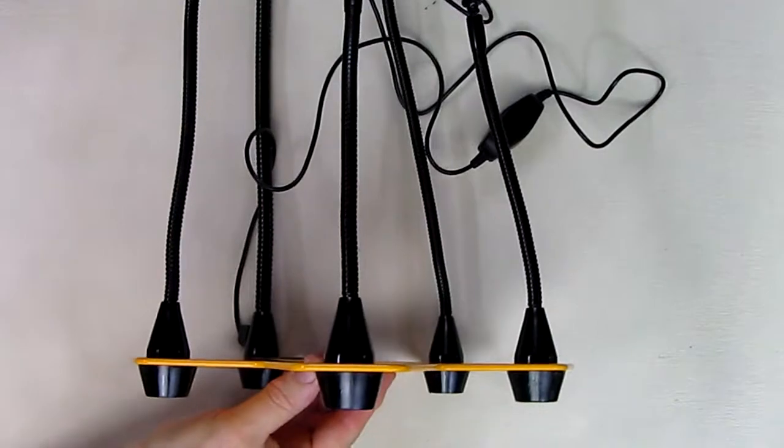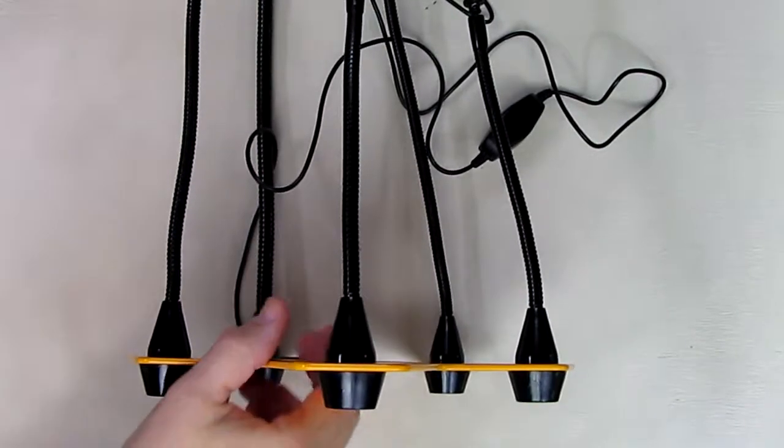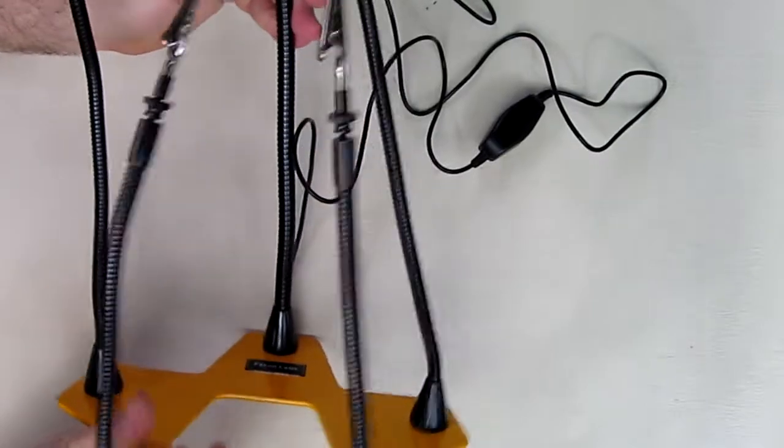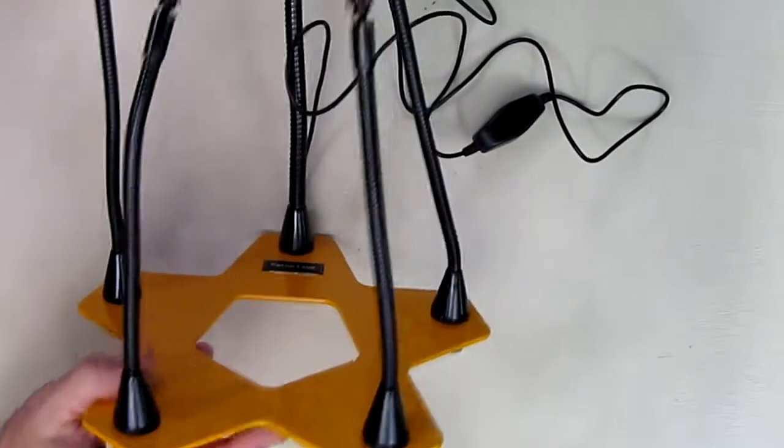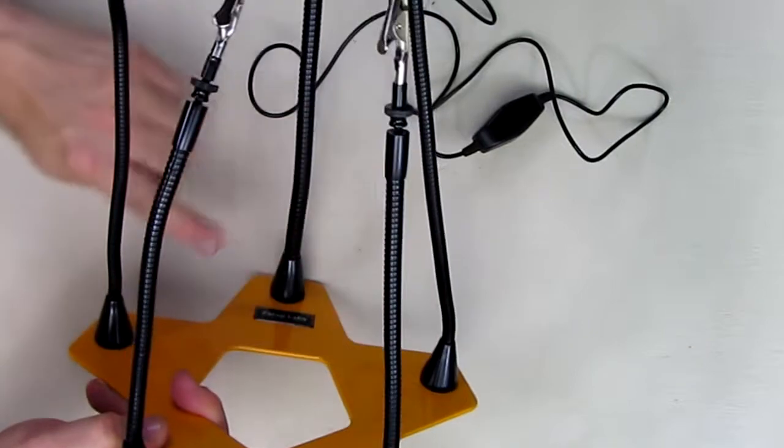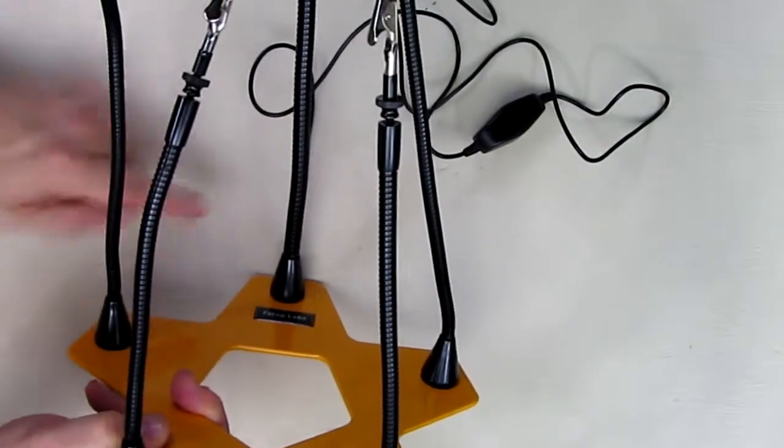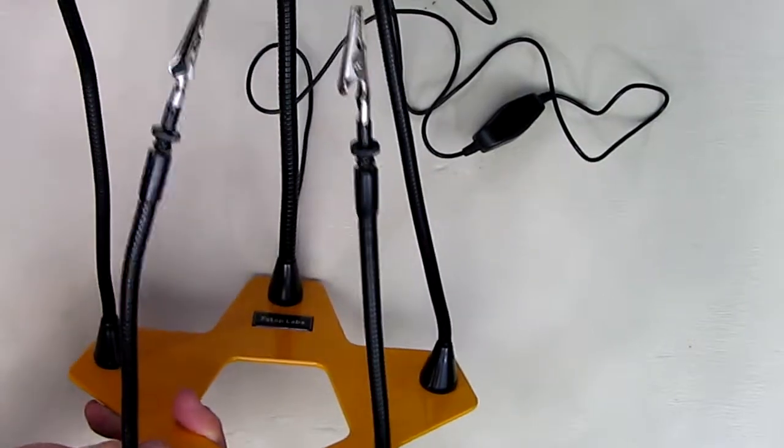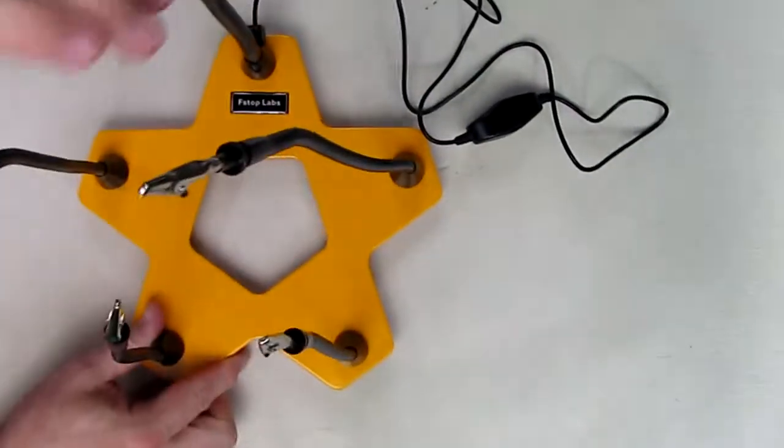So here it is assembled, and I want to point out that there are two shorter legs that I chose to put in the front and the two longer legs are in the back. And then where the logo is, is where I put the LED light.